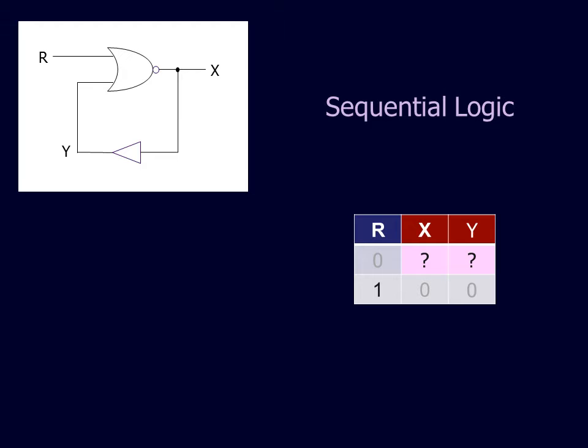In the example shown, if the input r is 1, then the outputs x and y must both be 0. But if r is 0, the values of x and y cannot be definitively determined.